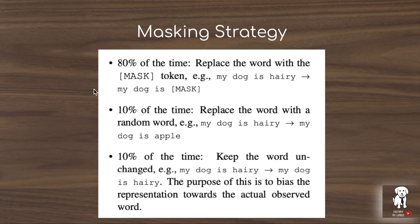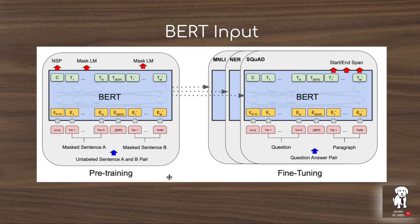80% of the time the selected word is replaced with the mask token. Words are tokenized using the wordpiece tokenizer in BERT. When BERT is fine-tuned on tasks like question answering, named entity recognition, or natural language inference, the mask token will no longer appear, which may throw off the model. To account for this, the selected token is also replaced with a random word or the same word with respective probabilities of 10% each. The input to BERT is constructed to facilitate fine-tuning for downstream tasks.